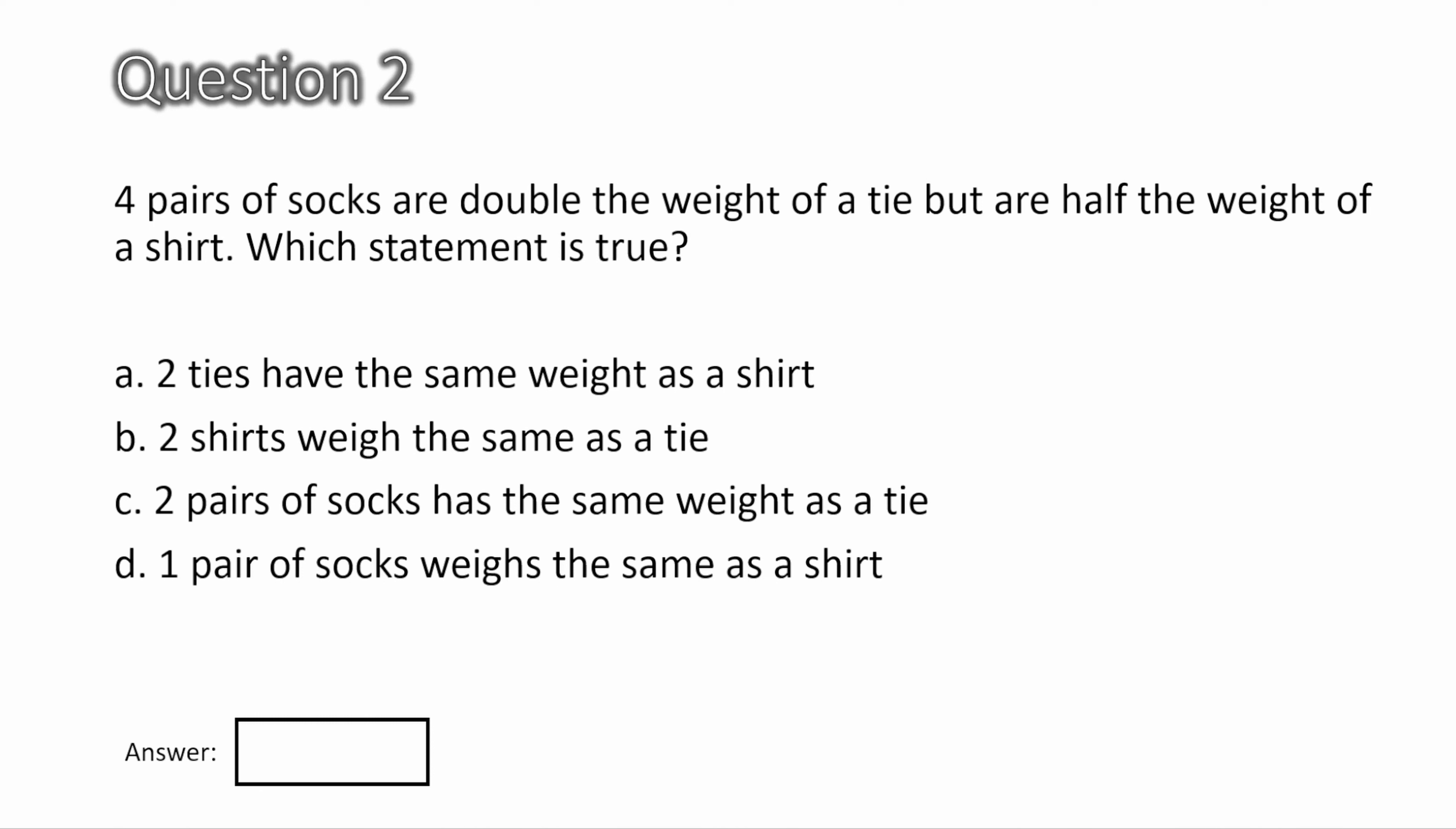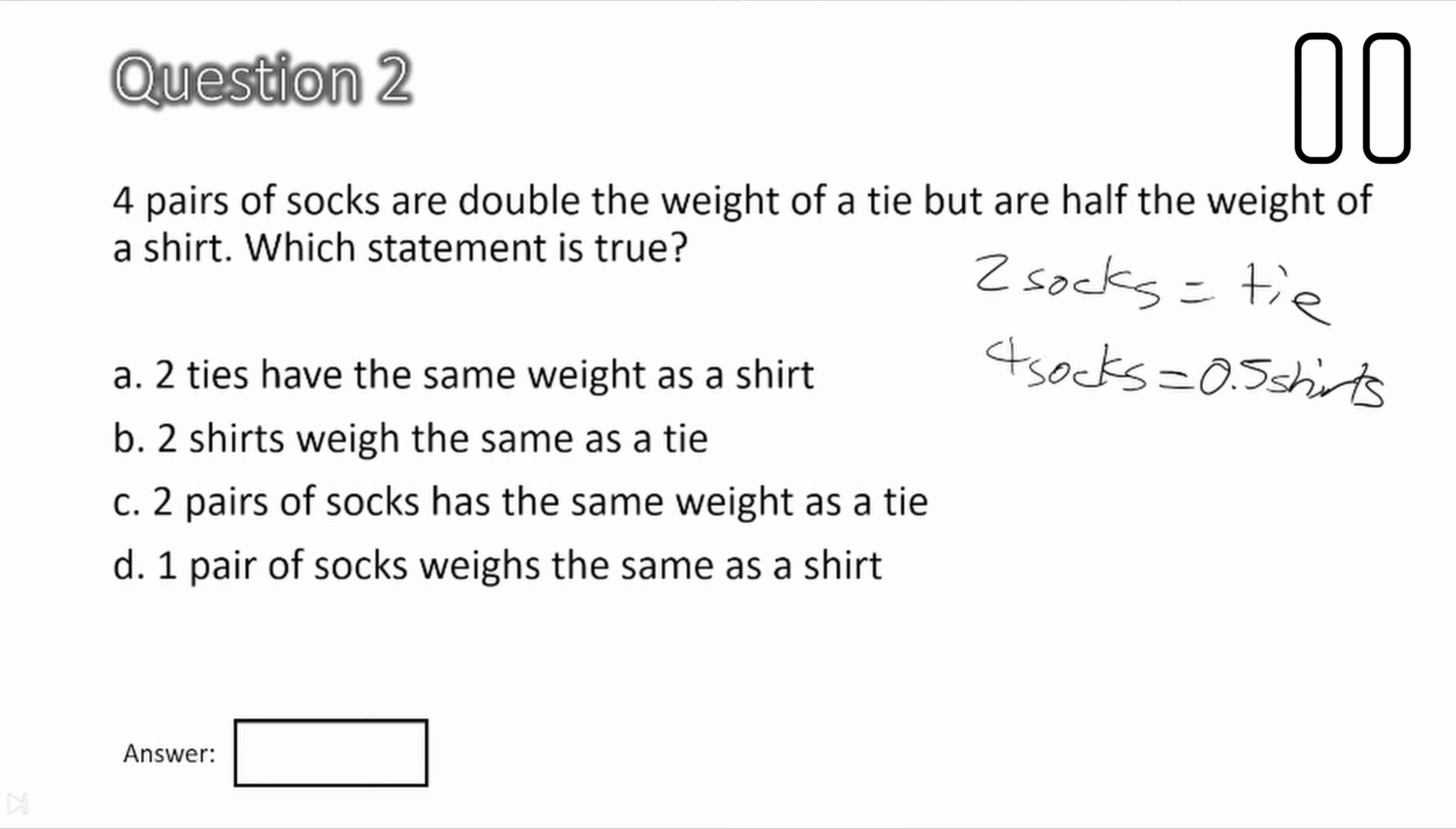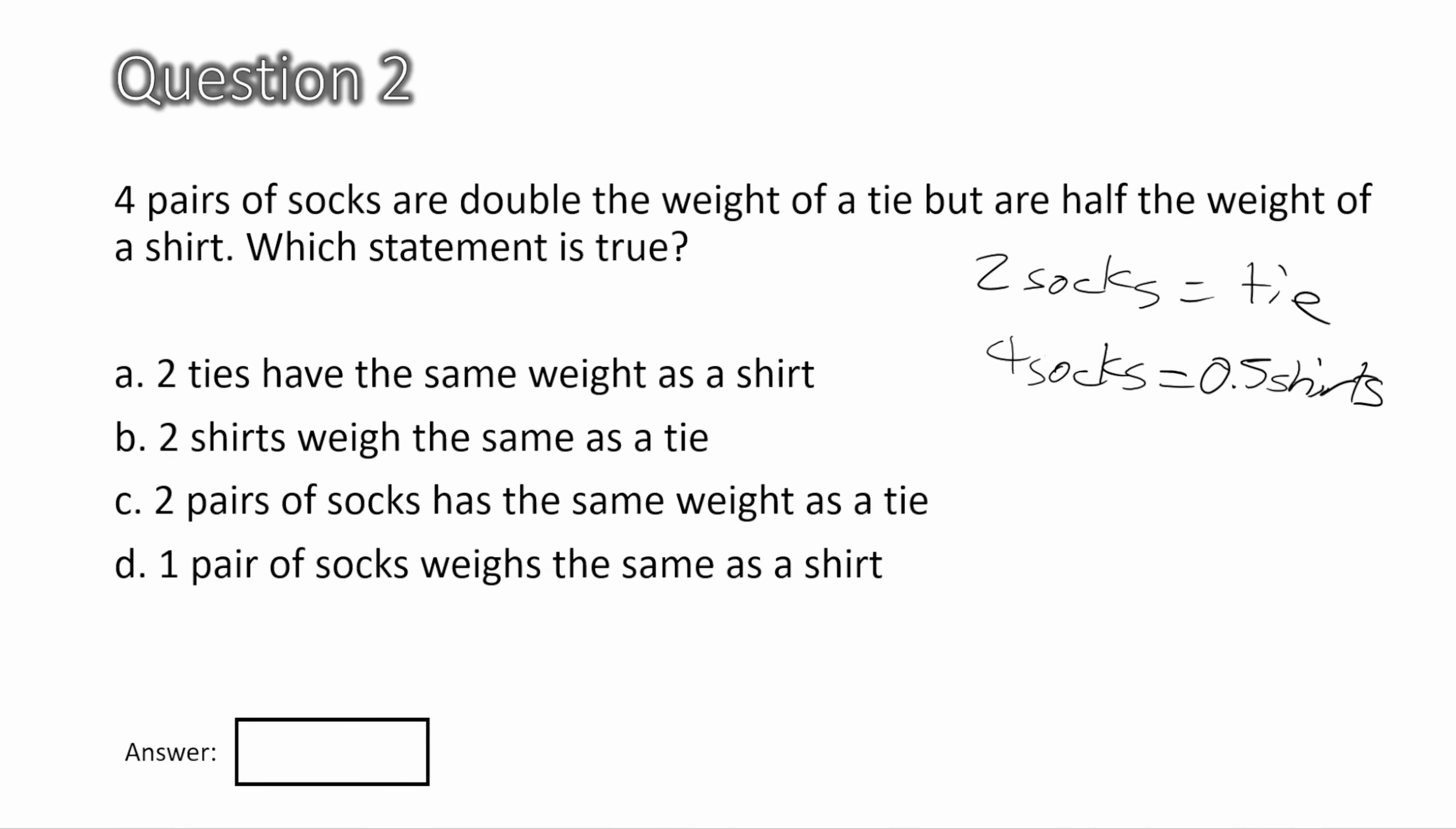Question 2. Four pairs of socks are double the weight of a tie, but half the weight of a shirt. Which statement is true? Okay, let's write these statements out so that they're a bit easier to read. So first we have four pairs of socks are double the weight of a tie. So that's the same as saying four socks equals two ties. Now how can we simplify that? Well, we can divide both sides by two, which gives us two socks equals a tie. Now next we have four pairs of socks are half the weight of a shirt, which is the same as saying four socks equals half a shirt. Now how can we simplify this? Well, we can double them both to make this a whole shirt. So let's do that.